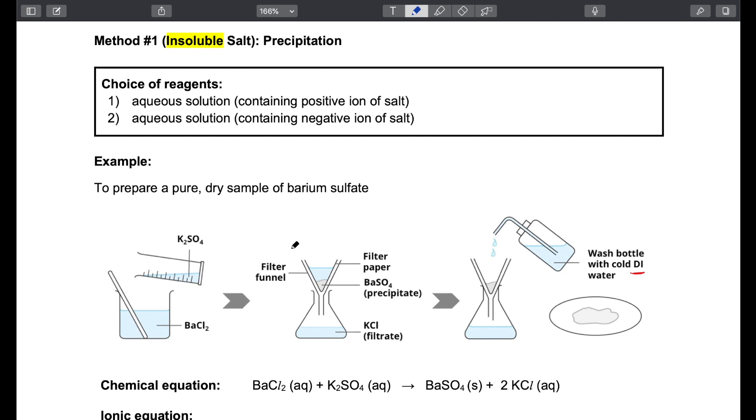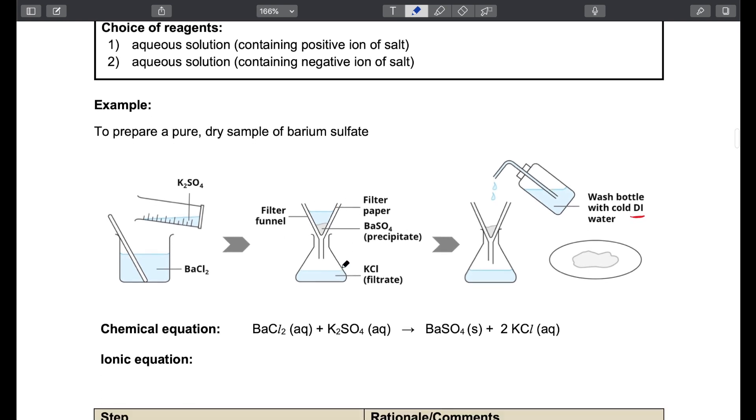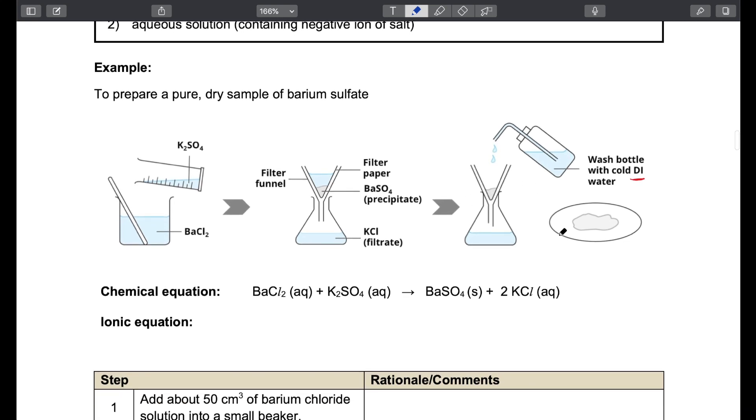When we do precipitation, we choose two aqueous solutions as the starting materials, one containing the cation, one containing the anion. Once we mix them and the precipitate is formed, we can filter it off, rinse the precipitate and then dry it. The example shown here is for the preparation of barium sulfate.